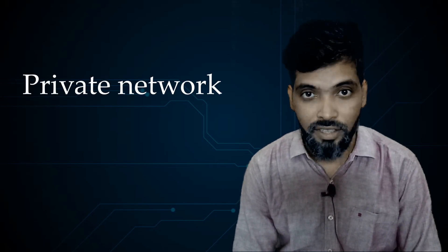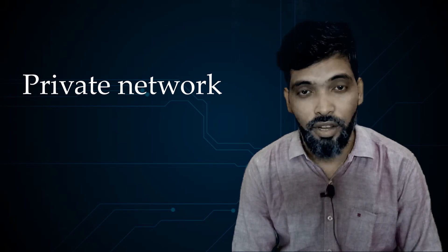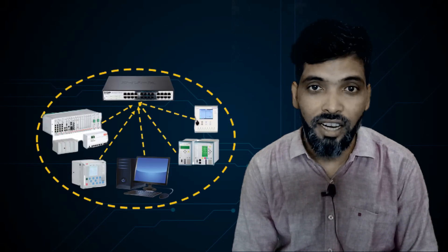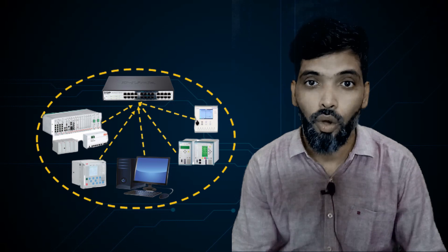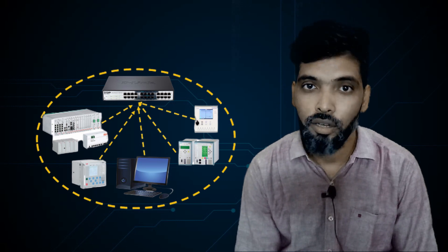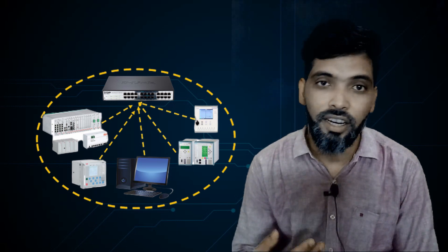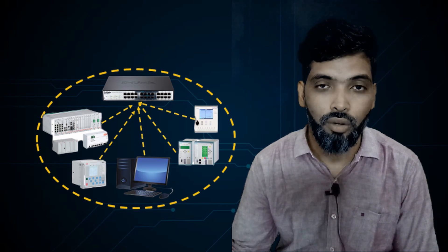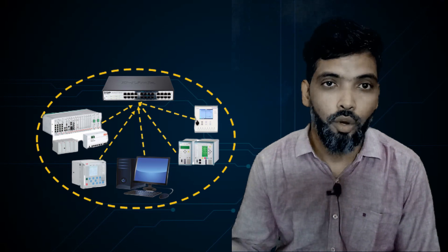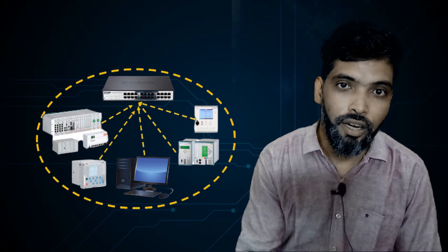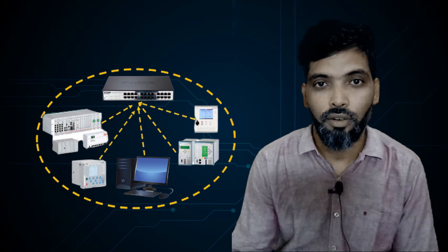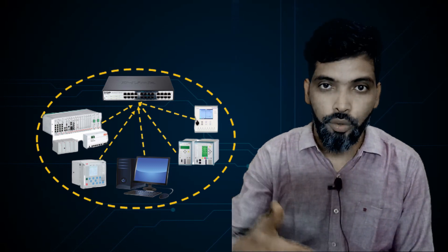First we will discuss types of networks. There are two types: private network and public network. A private network is when all your devices — SCADA system, relays, RTU — everything is connected to an internal local area network. That network is not connected to the outer world, and nobody can come directly into your network without your permission.